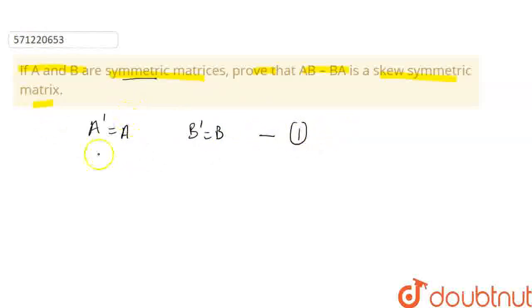Now, we need to prove that AB minus BA is skew symmetric.